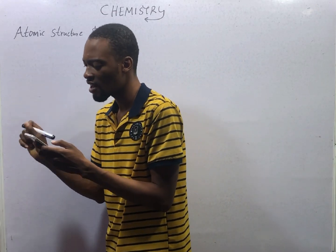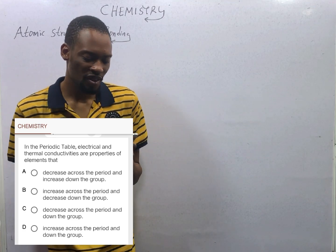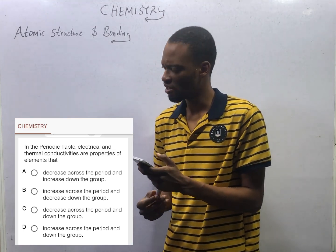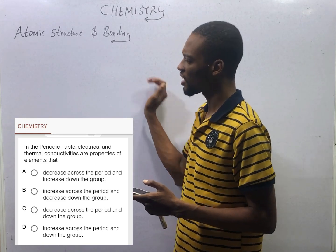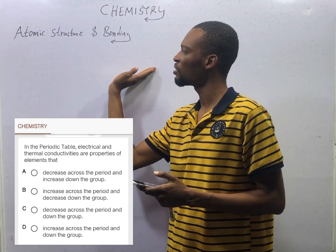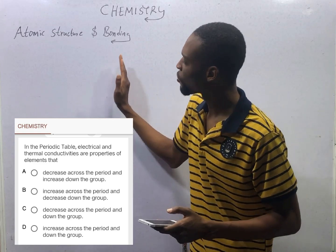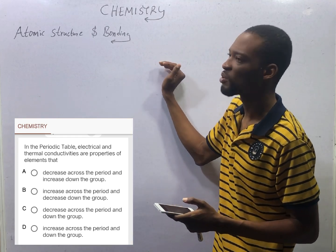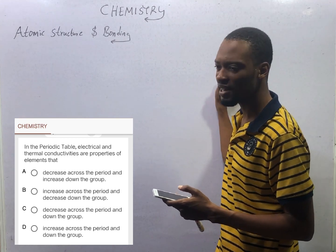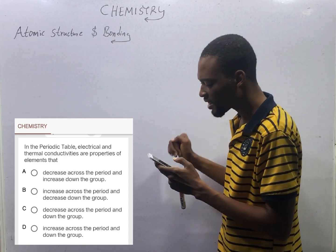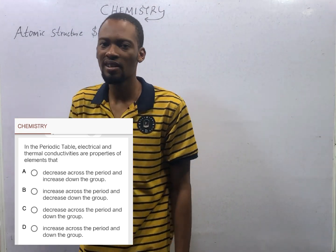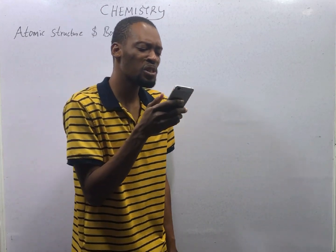In the periodic table, electrical and thermal conductivities are properties of elements that decrease across the period and increase down the group. As you go down the group, electrical property increases. As you go along the period, electrical property decreases. This is why Group 1 is a metal, Group 2 is a metal — as you go across, you begin to see more metals and even inactive metals, including the noble gases, which don't conduct at all. So as you go across the period, electrical and thermal conductivity will reduce; but as you go down the group, it will increase. Option A is the correct option.